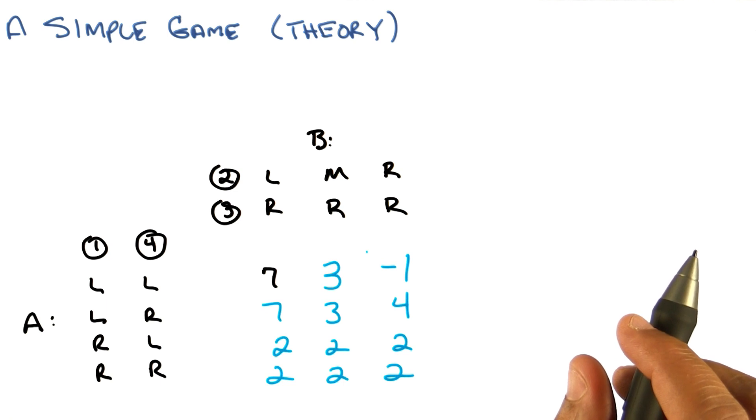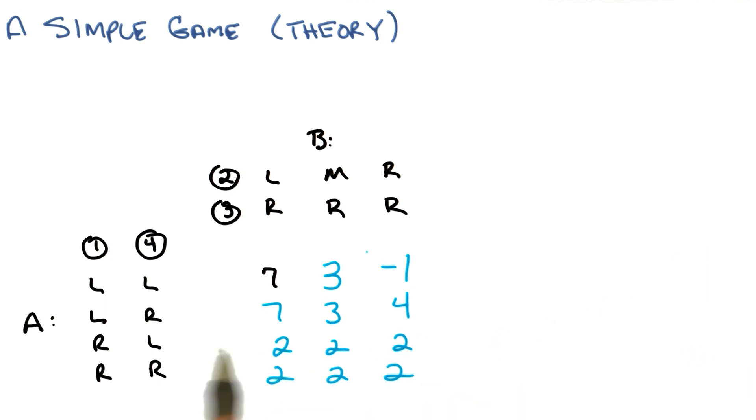Okay then. So then what if A chooses the second row? Okay. If A chooses the second row. So now, again, B is not going to let them have that seven, which is kind of sad. But, but still can't make it too bad for A. So like B would choose the middle right strategy. And then that would be a three for A, a minus three for B.